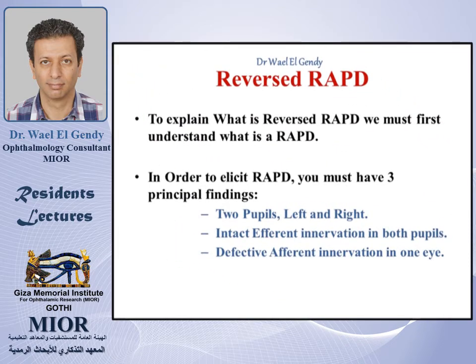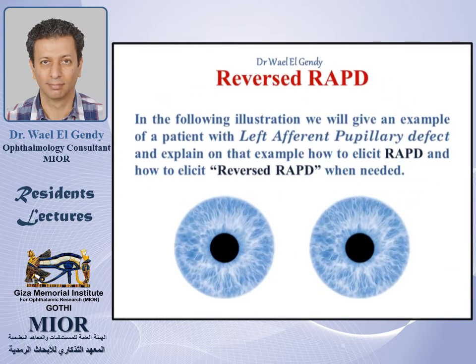In order to understand the reversed relative afferent pupillary defect, we must also understand the relative afferent pupillary defect in itself. In order to elicit a relative afferent pupillary defect, we must have three principal findings: two pupils — left and right — intact afferent innervation for both pupils, and a defective afferent innervation in one eye.